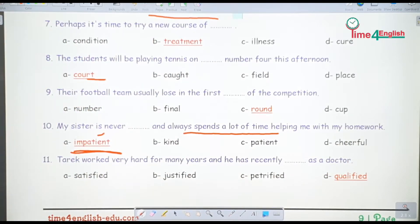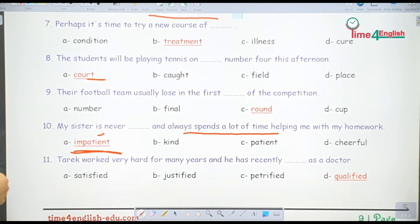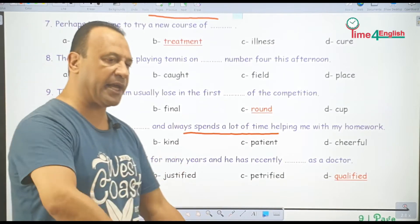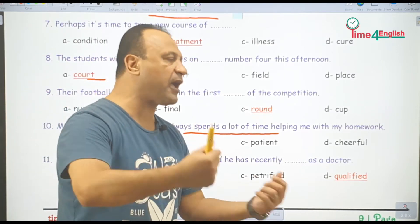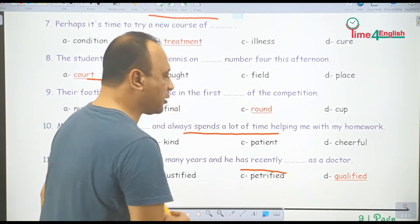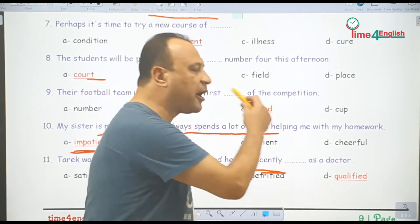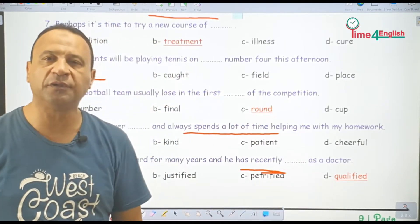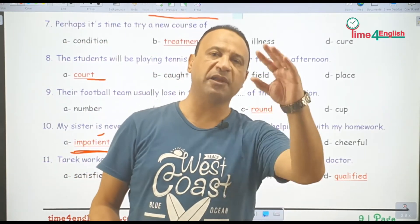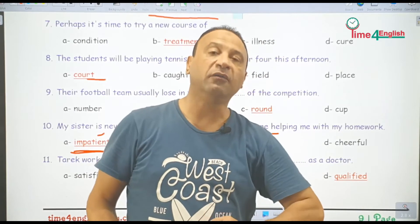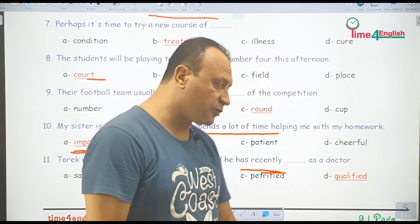Tariq worked very hard for many years and has recently qualified as a doctor. الراجل ده له سنين شغال وبيذاكر وبيتعب، ومؤخراً ربنا كرمه. He has qualified as a doctor — تأهل وتخرج من كليته وتأهل للعمل كطبيب.